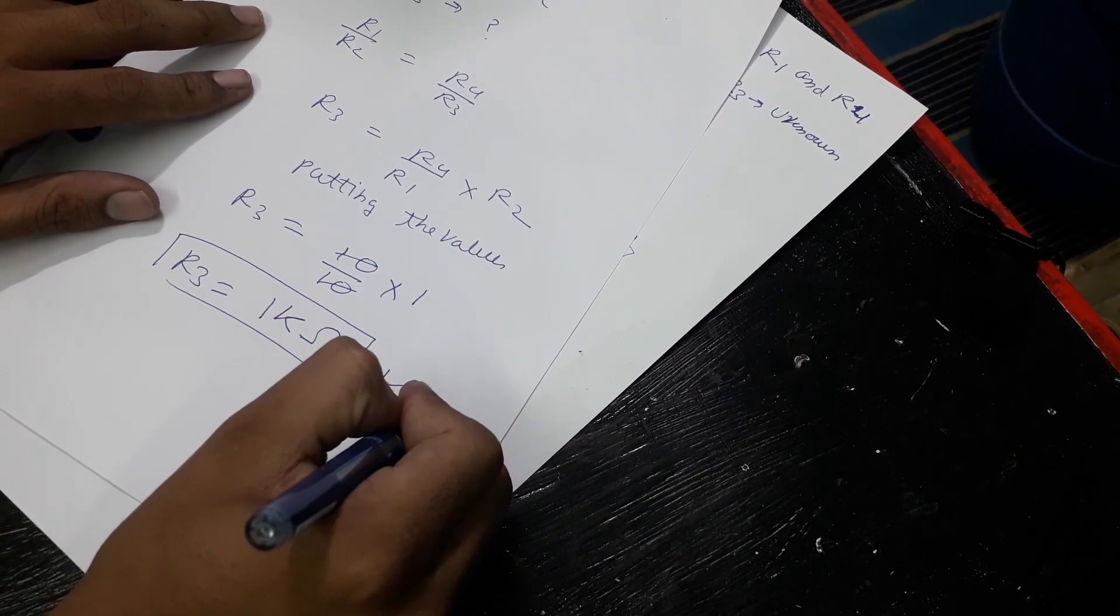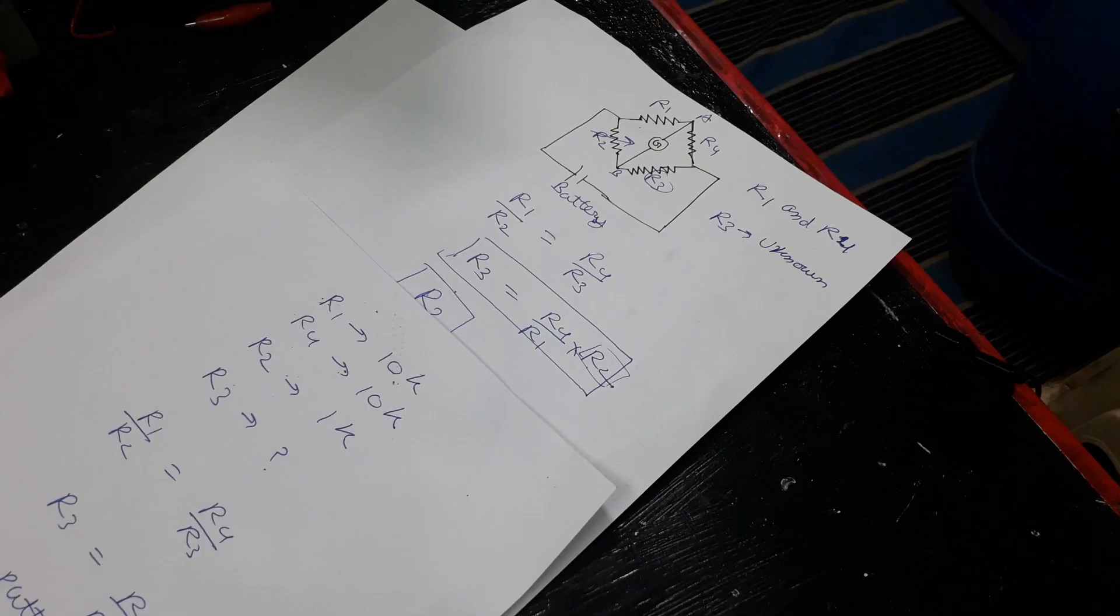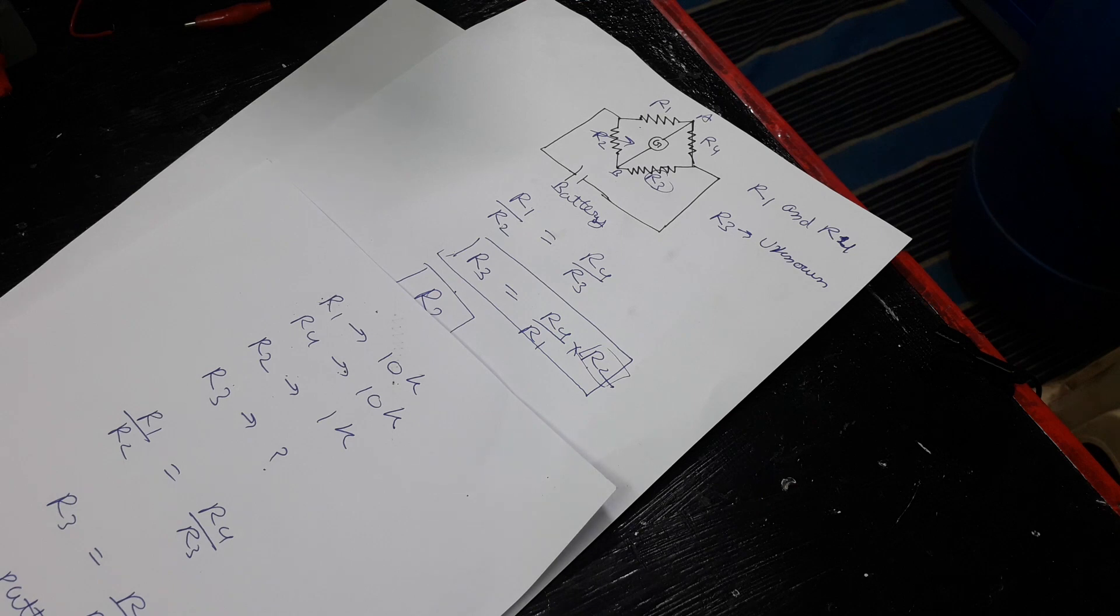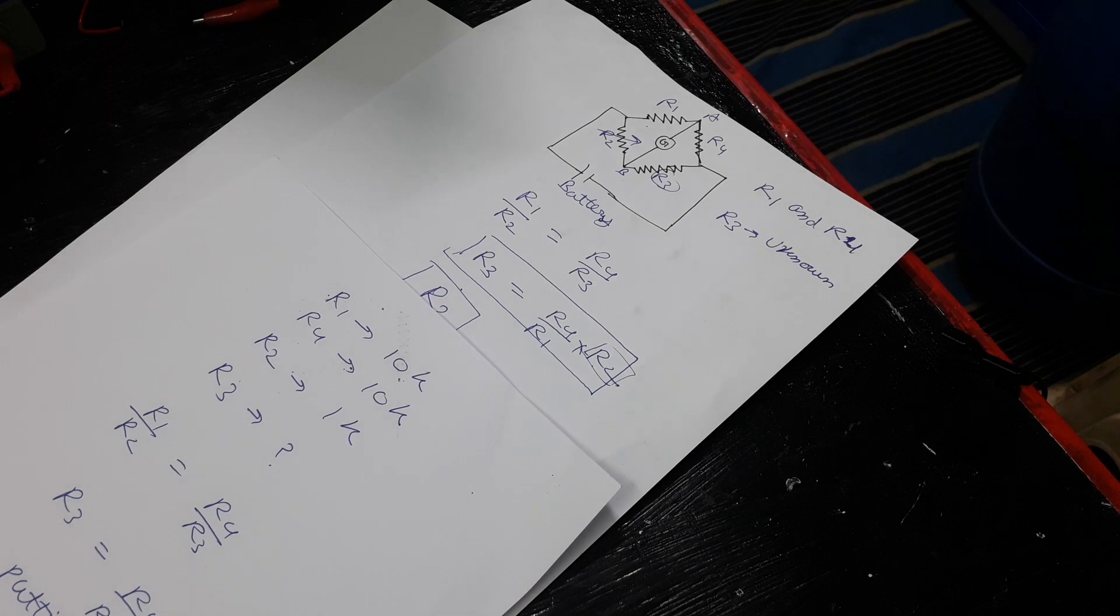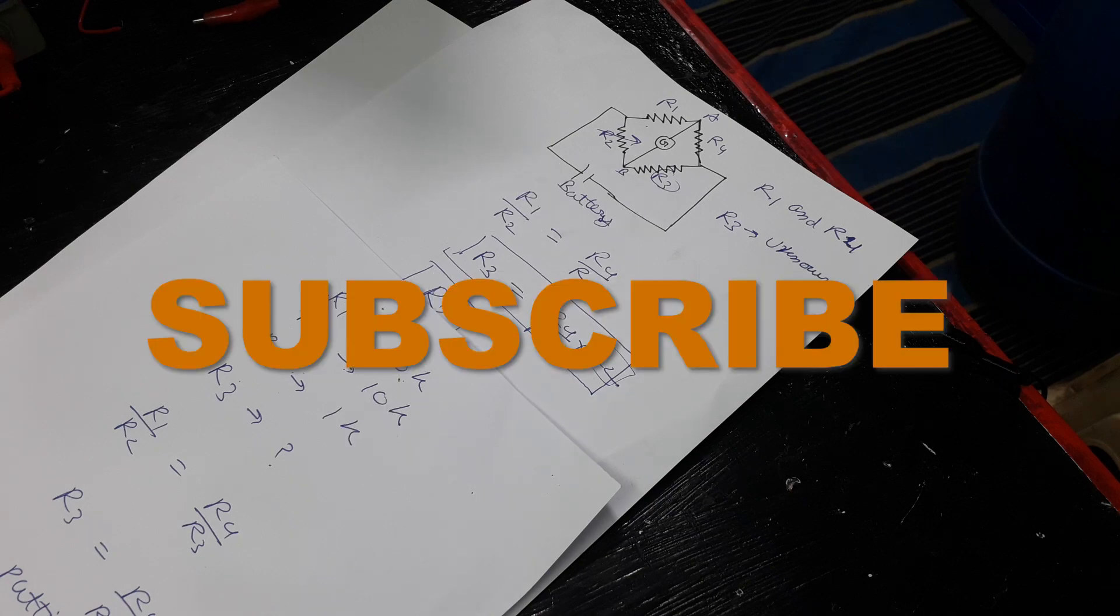And this is the correct answer. From this explanation you can see that with the help of a Wheatstone bridge you can calculate unknown resistance very precisely. I hope you understand what a Wheatstone bridge is and that you liked this video. Please like, comment and share, and if you want to stay tuned with my upcoming videos, please subscribe.